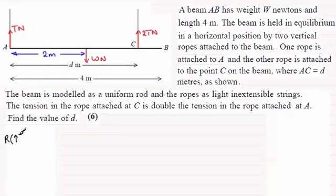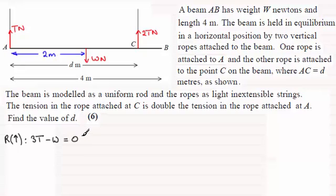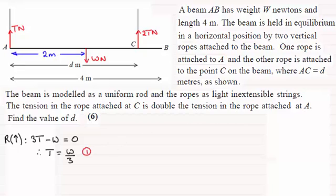Let's start by resolving vertically. I'm going to take upwards as the positive sense, because it means the T's will be positive. We have T plus 2T acting upwards — that's 3T — and then minus W because it acts in the opposite sense. Because it's in equilibrium, that resultant force must equal zero. So therefore T equals W divided by 3. I'll number that equation 1 and use it later.